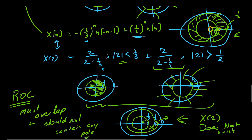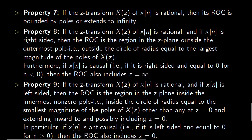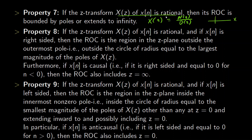The remaining properties seven, eight, and nine can be inferred from the first six. Property seven states that if X of Z is rational, then its ROC is bounded by poles or extends to infinity — that is, if X of Z has the form N(Z)/D(Z), the ROC is limited to a region defined by the poles, or if there are no poles, it extends to infinity.